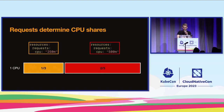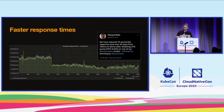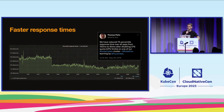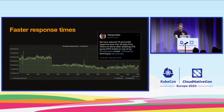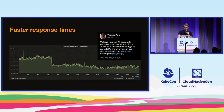Thomas posted a graph on Twitter where they removed CPU limits and saw their 75th-percentile response times drop from 150 milliseconds down to 90 milliseconds — a very dramatic effect. You might say: 'But if I remove my limits I'm not in the best quality-of-service class anymore.' So let's look at the concept of quality of service for a second.